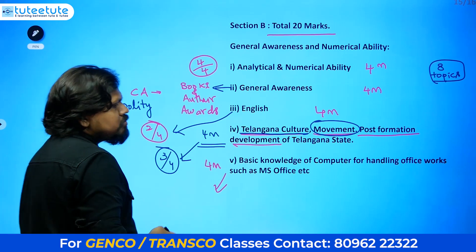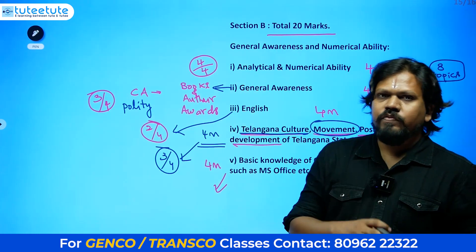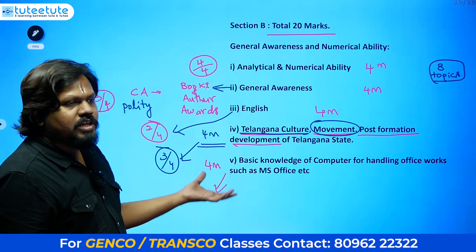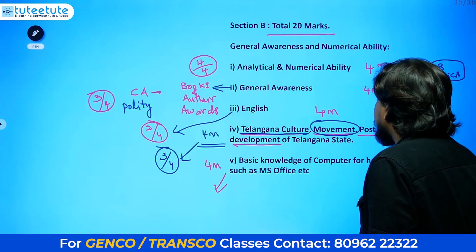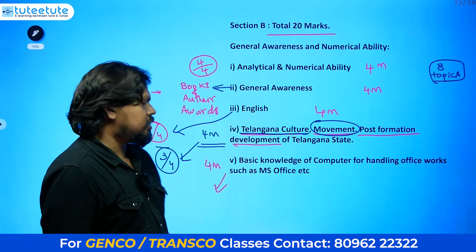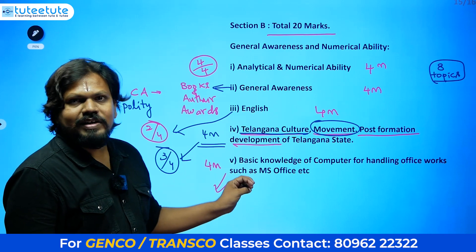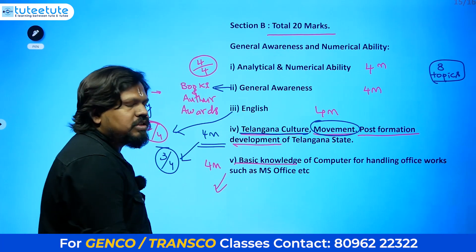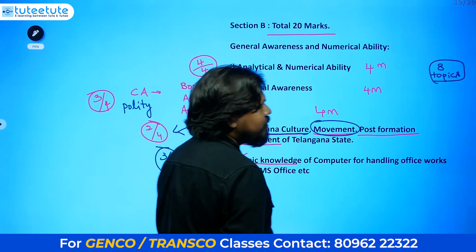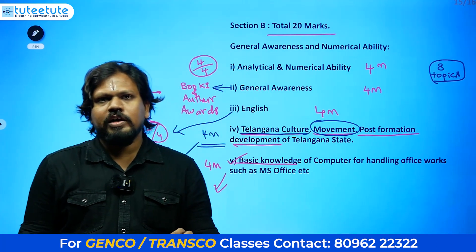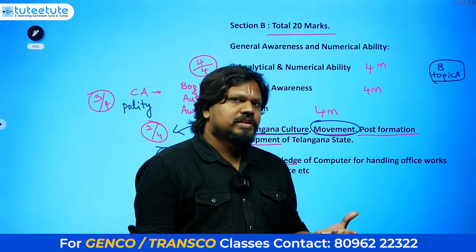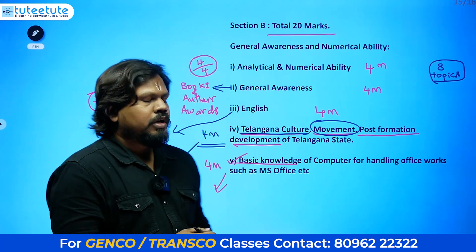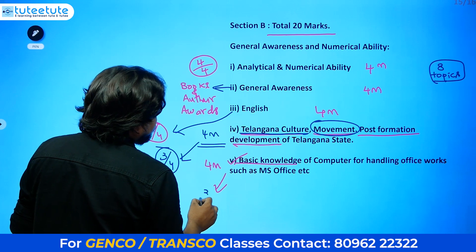For Basic Computer Knowledge, sometimes very simple questions come, and sometimes unexpected ones like digital electronics. Topics include which chips computers use, input and output devices, MS Office basics, what is inside a motherboard, generations of computers, and recent advancements. If you completed B.Tech, you already have basic knowledge. We will provide around 50 practice questions covering these areas. Target at least 3 out of 4 here.